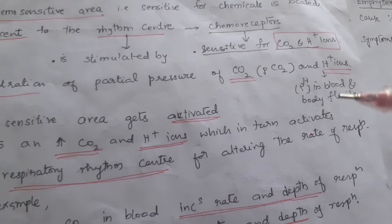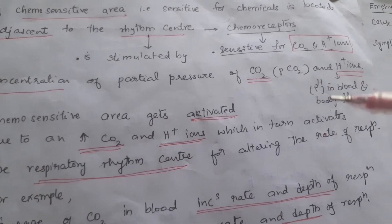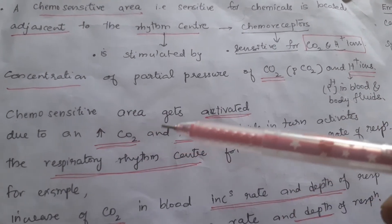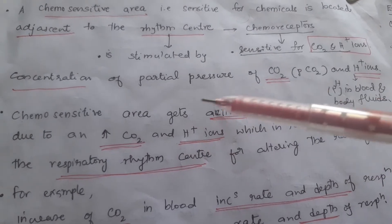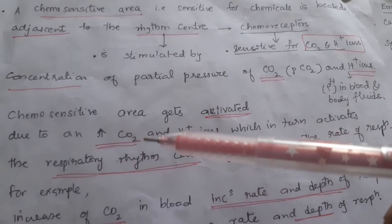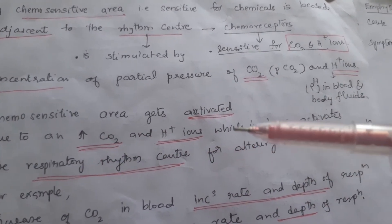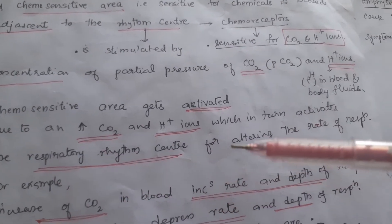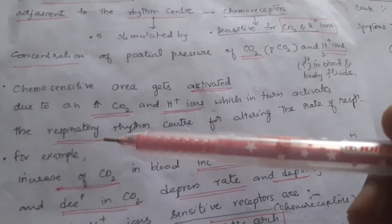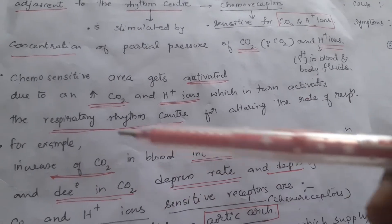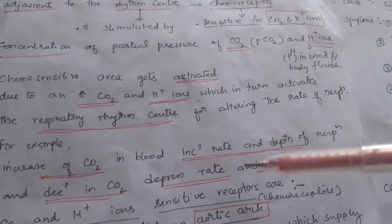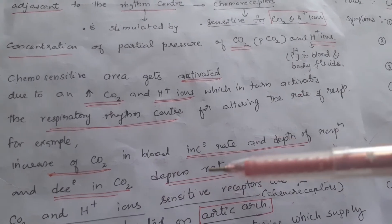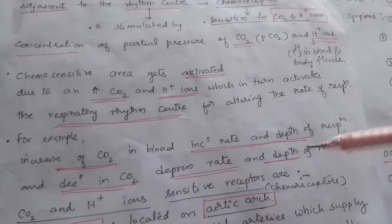pH present in blood and body fluids reflects H+ ion concentration. The chemosensitive area gets activated due to an increase in CO2 and H+ ions, which in turn activates the respiratory rhythm center for altering the rate of respiration. For example, an increase in CO2 in blood increases the rate and depth of respiration, and a decrease in CO2 will depress the rate and depth of respiration.